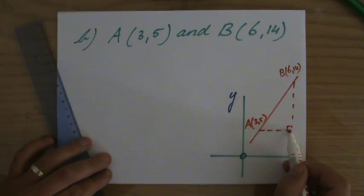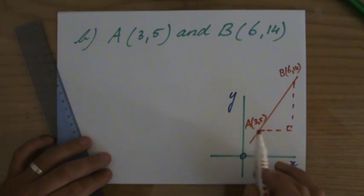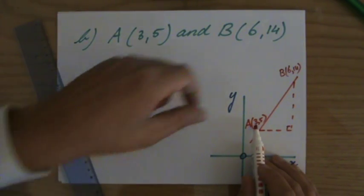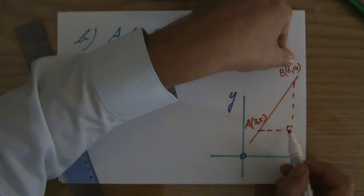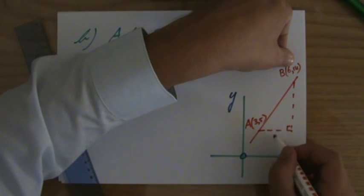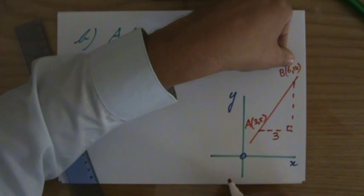Okay. Now how many steps, or how long, is this side? Yeah? Well, the x-coordinate of A is 3, and the x-coordinate of B is 6. So this starts at 3, and finishes at 6. So those are 3 steps. Yeah? From 3 to 6.